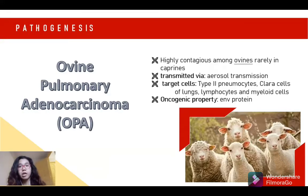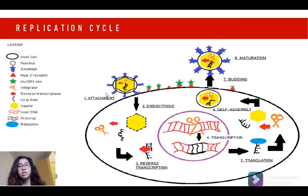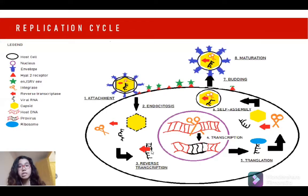So next is the replication cycle. The replication cycle of JSRV starts from the initial attachment of the viral particle's ENV glycoprotein to the HYAL2 receptor. Upon endocytosis, the viral capsid degrades, allowing release of viral RNA and enzymes into the cytoplasm. Reverse transcription of the viral RNA is then activated with the help of the reverse transcriptase enzyme, and the single-stranded RNA genome is transcribed into double-stranded DNA as it enters the host nucleus.